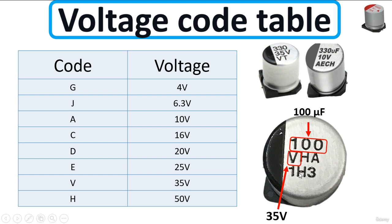Here this is a lot number. Based on this letter, the first letter always indicates the voltage. So we have here the letter V. We should use the code table — let's look for the letter V. V means 35 volts. So this capacitor's characteristics are 100 microfarads and 35 volts.